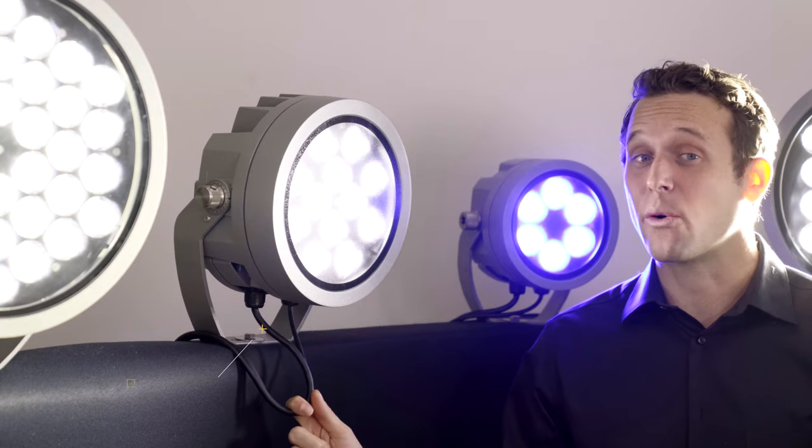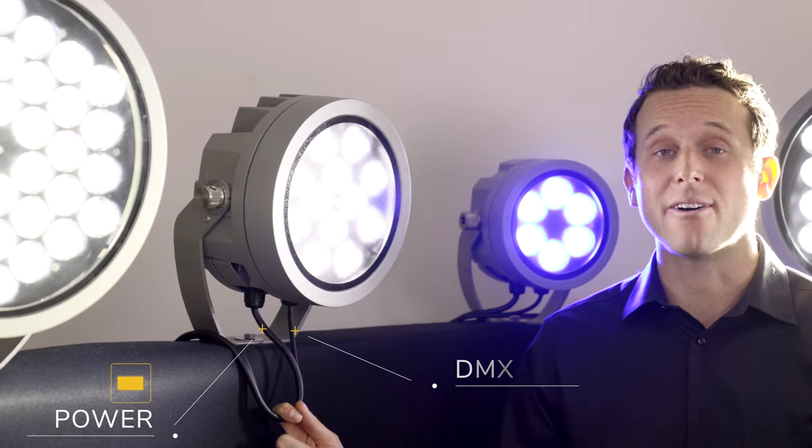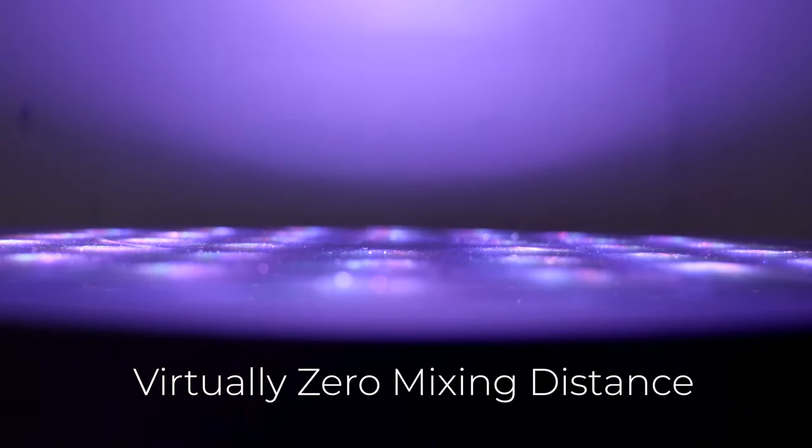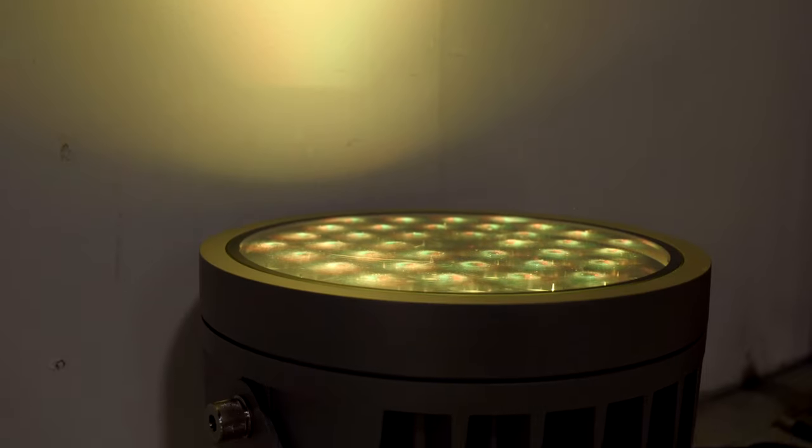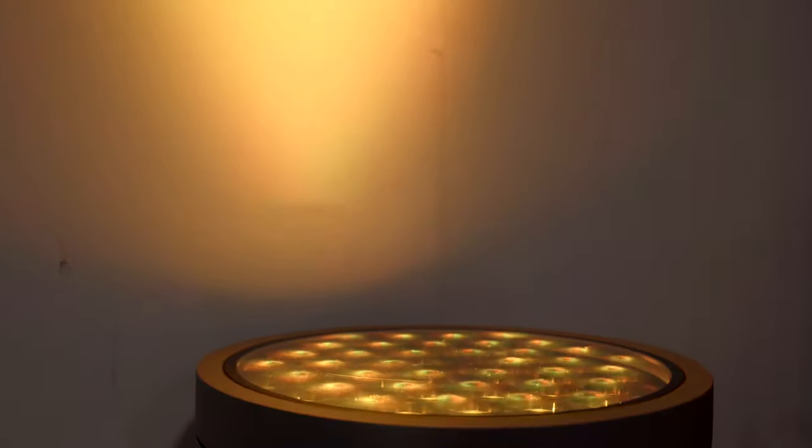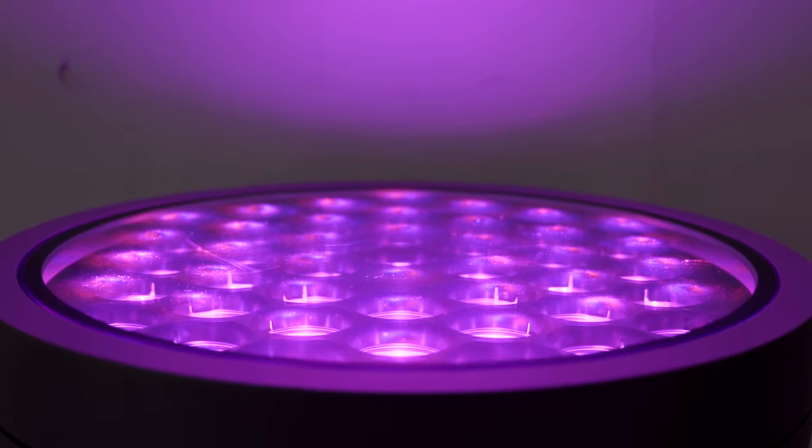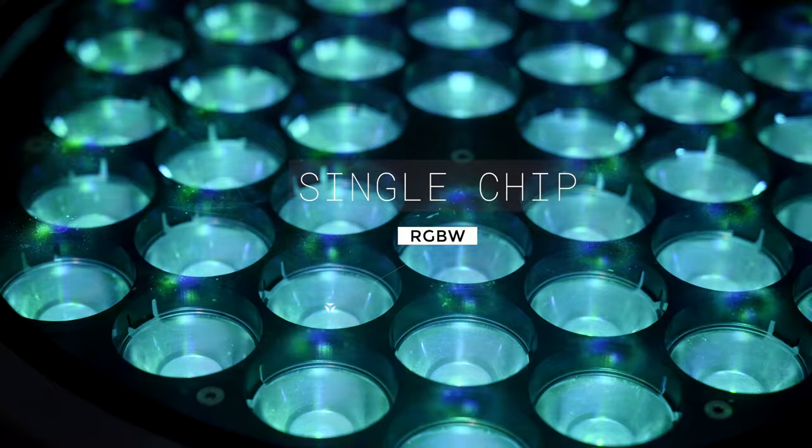Side note, it does require two cables, one for power and one for your DMX. And don't forget, both of those options have virtually a zero mixing distance. What exactly does that mean? Essentially, if you were to put this up right next to the facade of a building or an object, you would have perfect blended color because you have a single chip that either puts out that RGBW or tunable white solution.